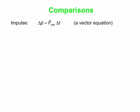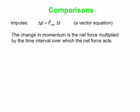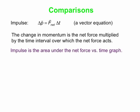So let's just compare them. Impulse — remember, our impulse equation gives us a change in momentum. Change in momentum is the net force multiplied by the time interval over which that net force acts. This is an equation that relates vectors. The net force, the momentum, the change in momentum — those are all vectors. And often you can get the impulse as the area under the net force versus time graph. So that gives you the change in momentum, also known as the impulse.